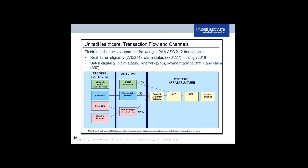Slide 19 gives a high-level view of our transaction flow. Data comes in from trading partners — including labs like LabCorp, providers, and clearinghouses — through either a direct connect method, a connectivity director, or a clearinghouse. Once within UHC, it goes through either a business-to-business environment or a gateway, then enters what we call EUFI — United Front End — which does our routing to our various claim engines.